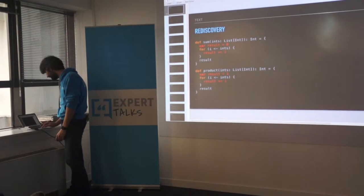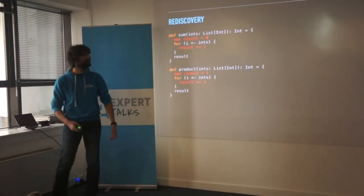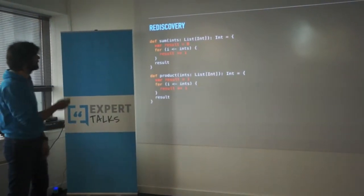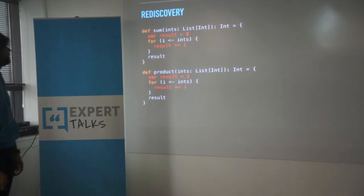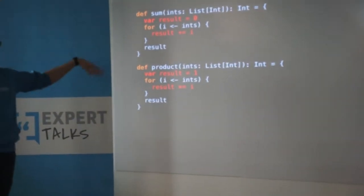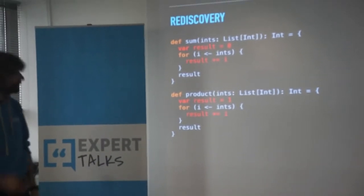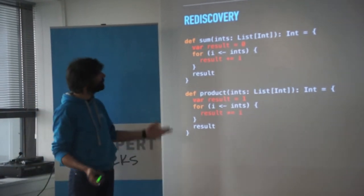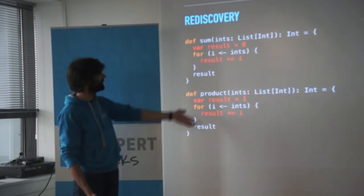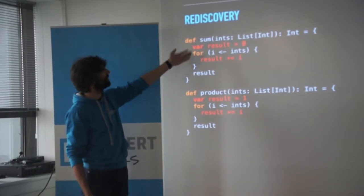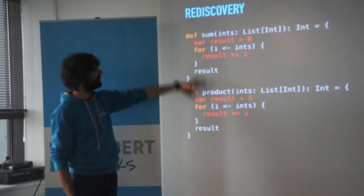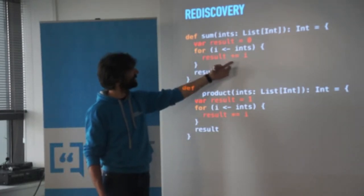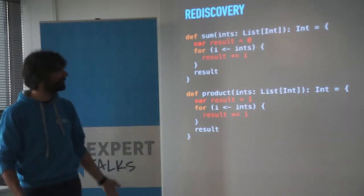I'll switch to the other presentation where the code can be shown, because when I moved to the other slides it lost all the syntax highlighting and structure. So let's start with something simple - this is a loop. If you want to sum the ints or product, there's this repetition of code. The zero and the one are different, and the way you put the result together is different, but everything else is the same. So let's try and take that thing out.